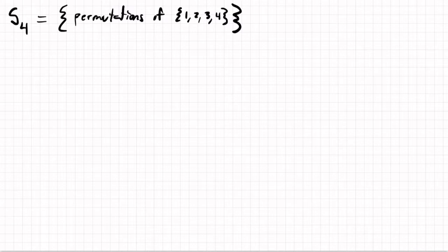We can ask ourselves, what are the possible orders of subgroups? We know that the order of S4 will be four factorial, because we can choose four places for the first one, then three for the second one, then two places for the third one, and one place for the last one. So that's four factorial, which is 24.